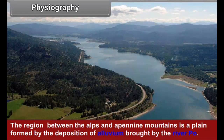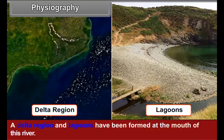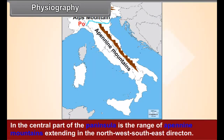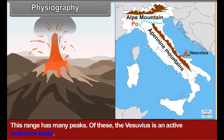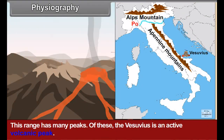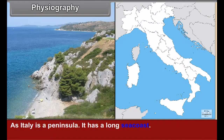The region between the Alps and Apennine mountains is a plain formed by the deposition of alluvium brought by the river Po. A delta region and lagoons have been formed at the mouth of this river. In the central part of the peninsula is the range of Apennine mountains extending in the northwest-southeast direction. This range has many peaks, of which the Vesuvius is an active volcanic peak.